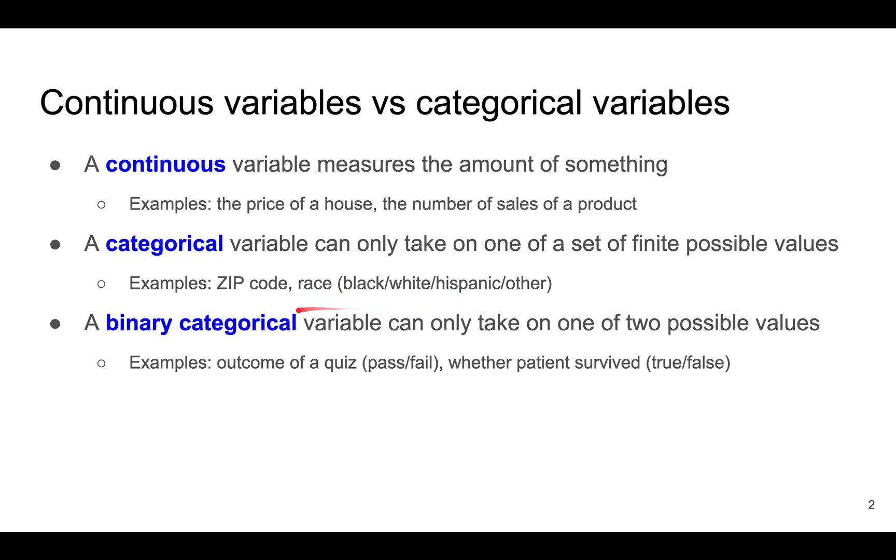In particular, some categorical variables are binary variables because there are only two possible values, such as whether a student passed or failed a quiz, or whether a patient survived or died.